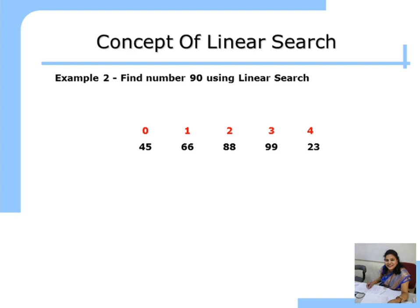This is another example — an example of unsuccessful search. When performing a searching operation, there are only two outputs: the search will be successful, meaning you found the element, or unsuccessful, meaning the element was not found. In the previous example, we found 23 at the 4th location — that was a successful search. In this example, we are going to search for the number 90, which is an example of unsuccessful search.